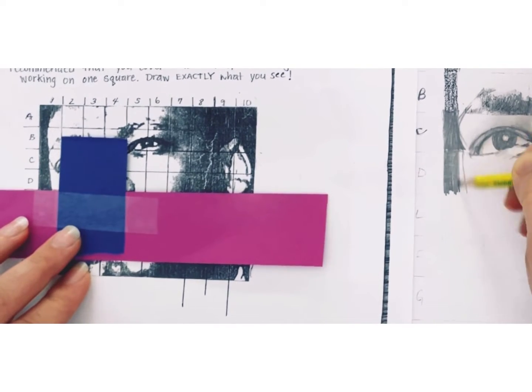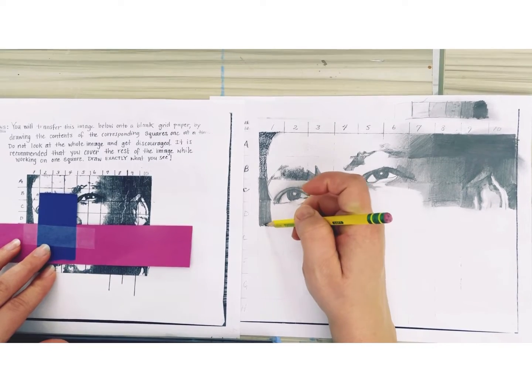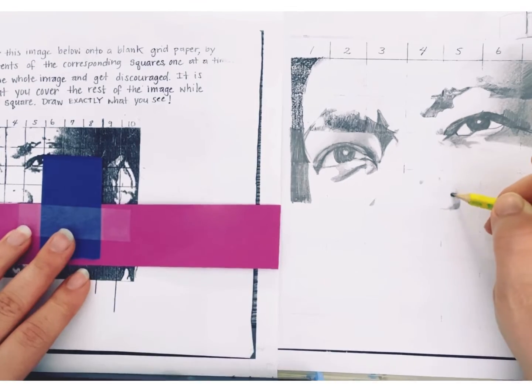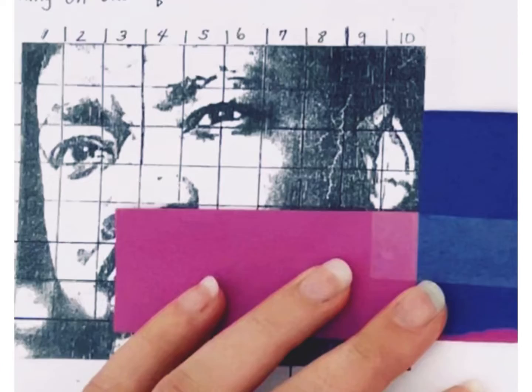In turn you'll be forced to actually look at what is in front of you. It is recommended that you cover the rest of the reference photo and focus on one square at a time. Avoid naming body parts such as ears or eyes.